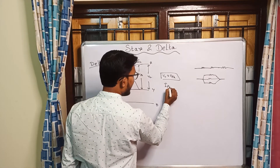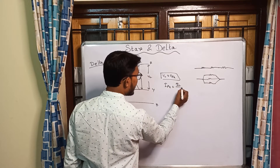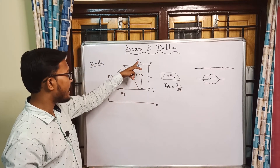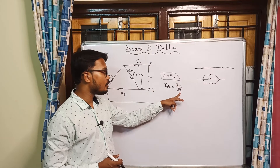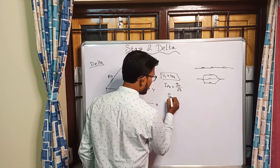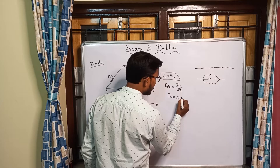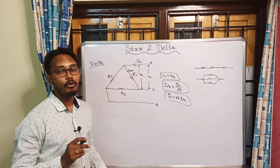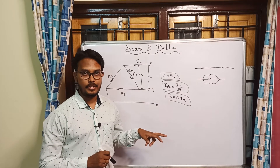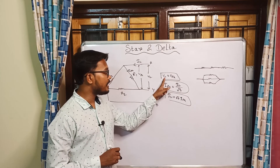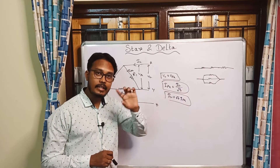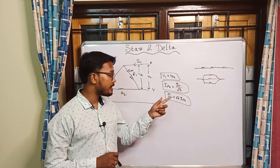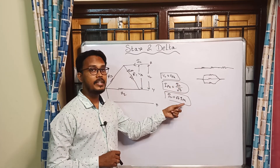For the current in delta connection: phase current equals line current divided by root 3, or line current equals root 3 times I_phase. So to summarize — delta connection: VL equals V_phase, and IL equals root 3 times I_phase. Star connection: IL equals I_phase, and V_phase equals VL divided by root 3.